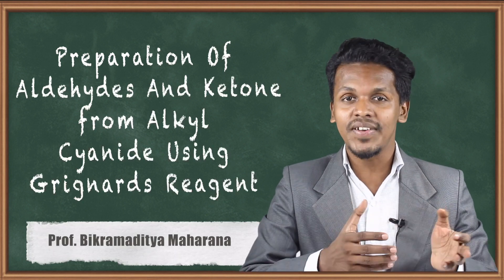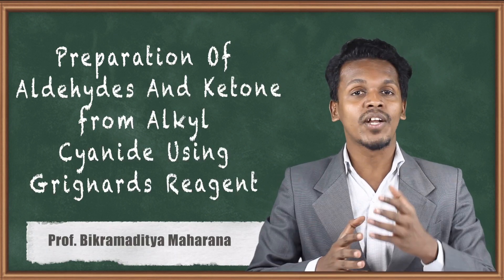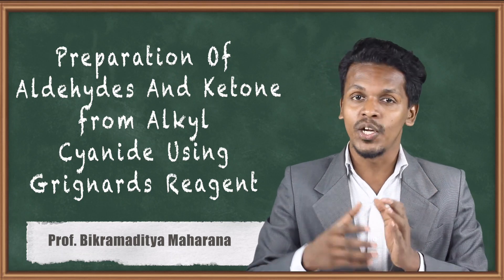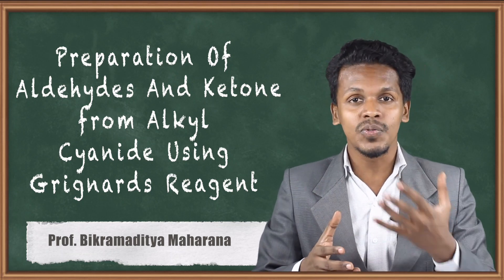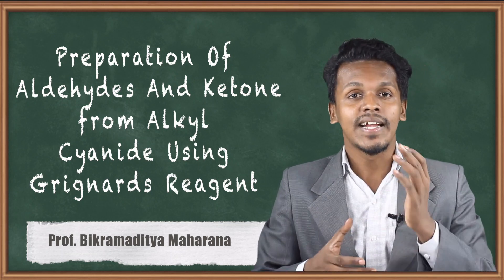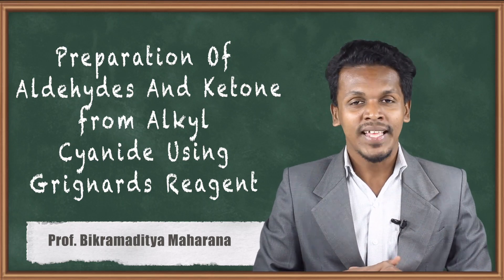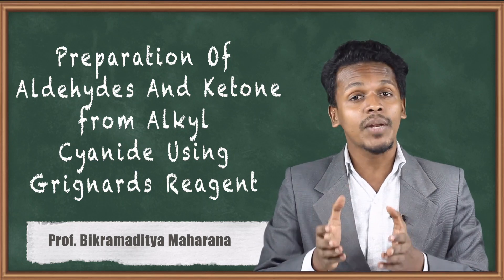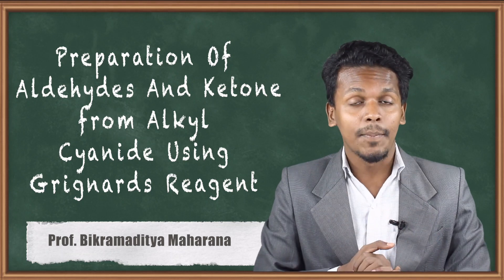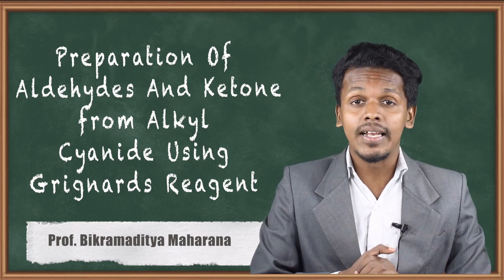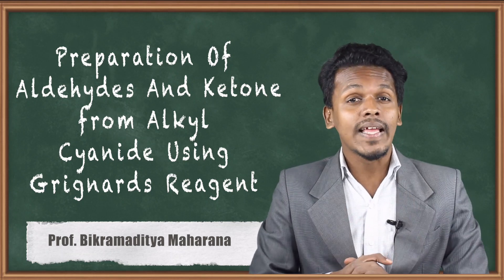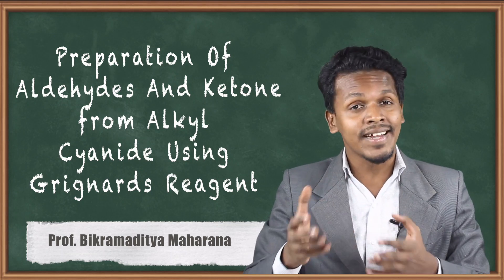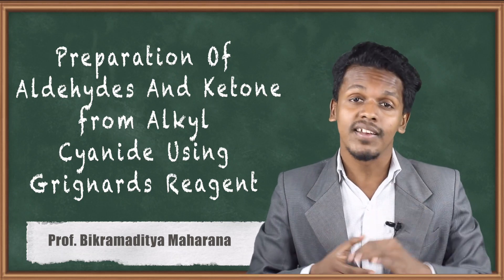In the previous lecture we discussed the Stephen reaction, along with how we can convert an alkyl cyanide into an aldehyde using the reducing agent diisobutyl aluminum hydride. Now in this topic we are going to discuss how we can prepare aldehyde as well as ketone by converting nitrile using a Grignard reagent — that is, preparing aldehydes and ketones using Grignard reagent.